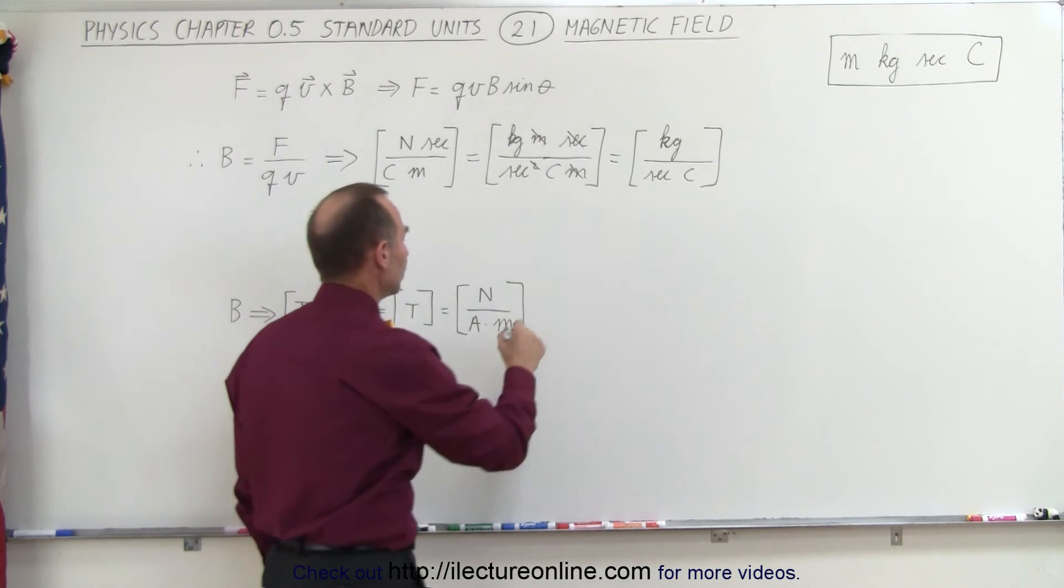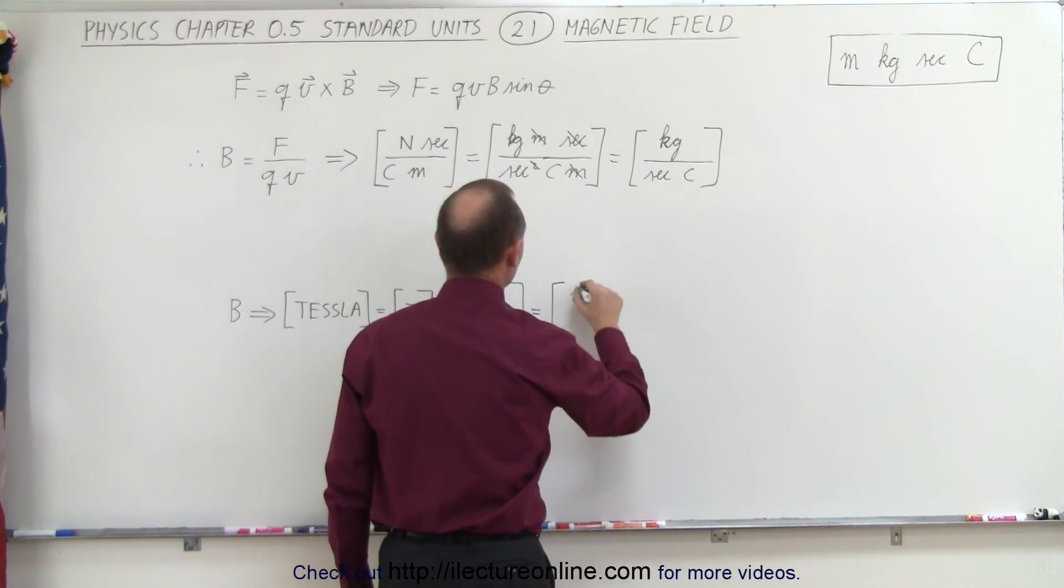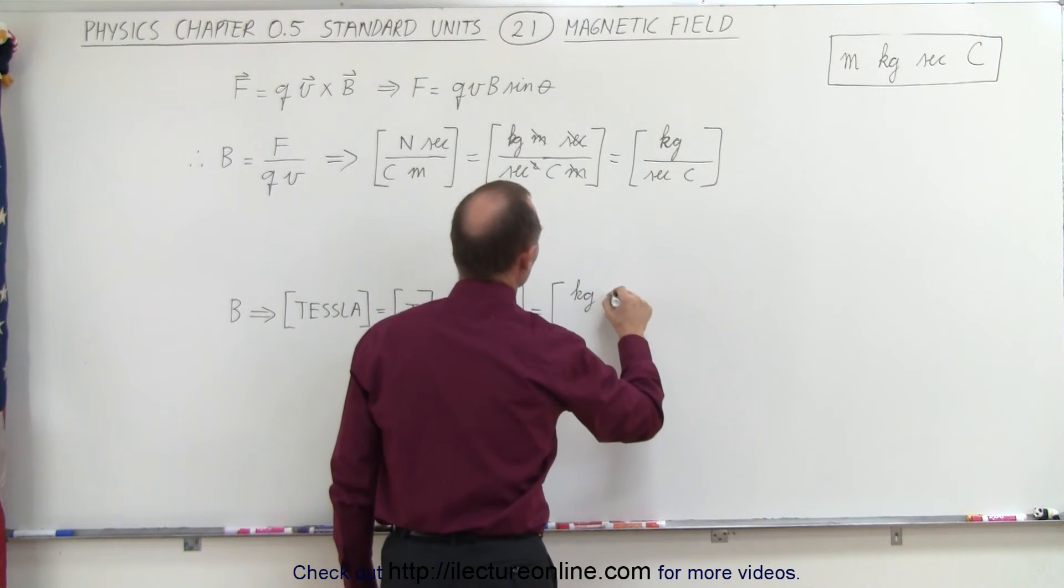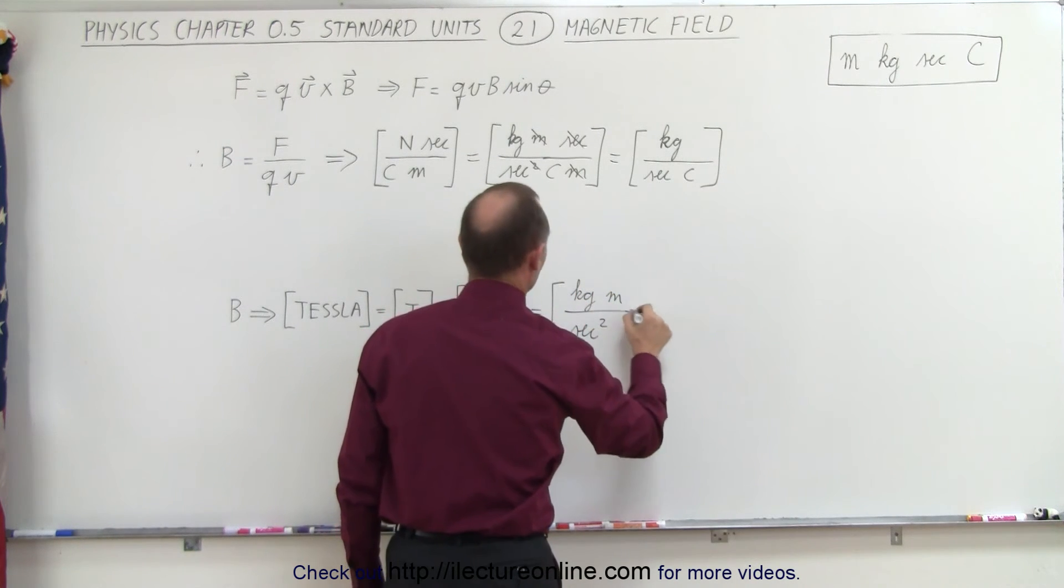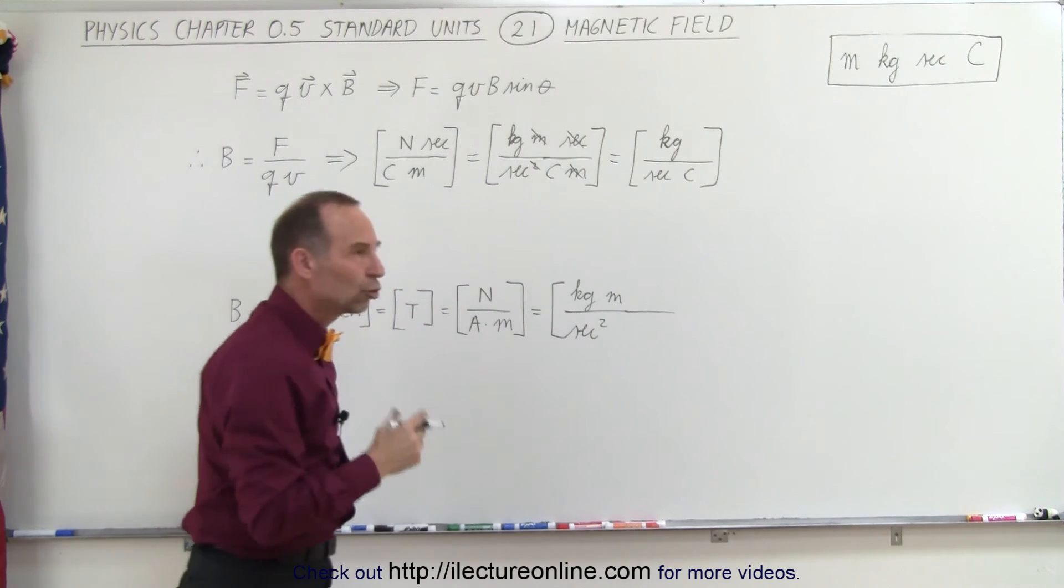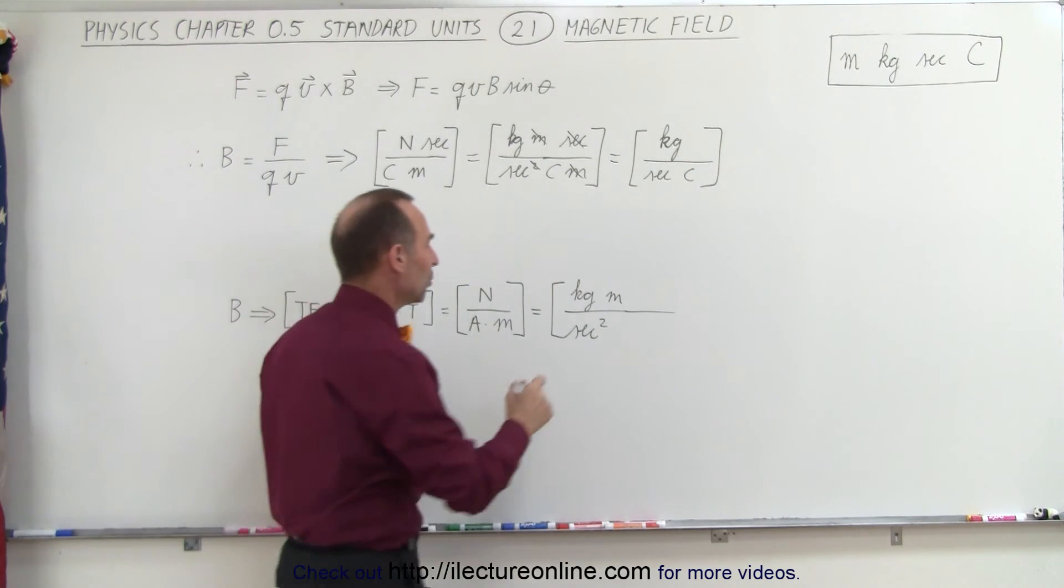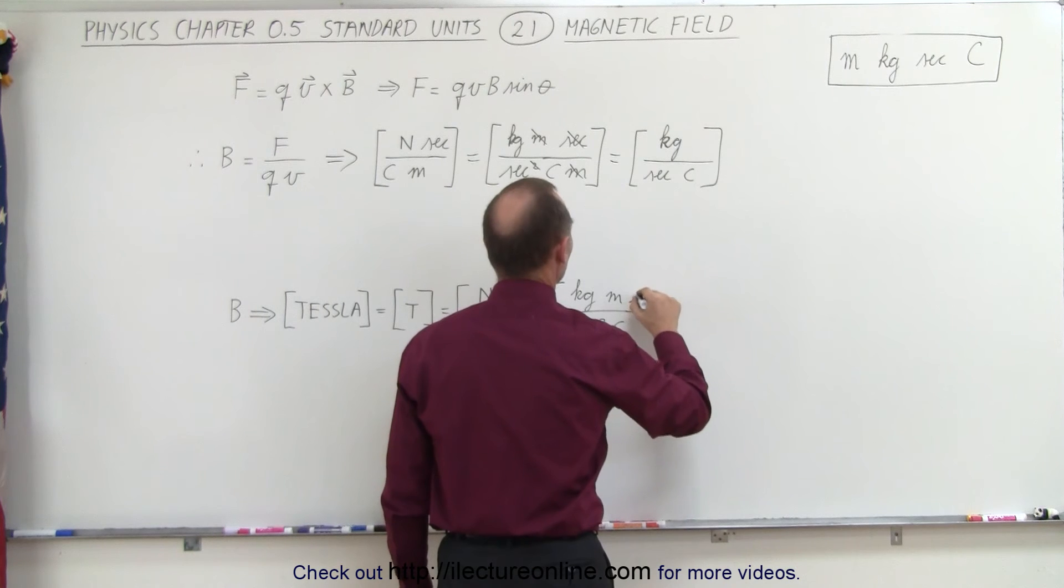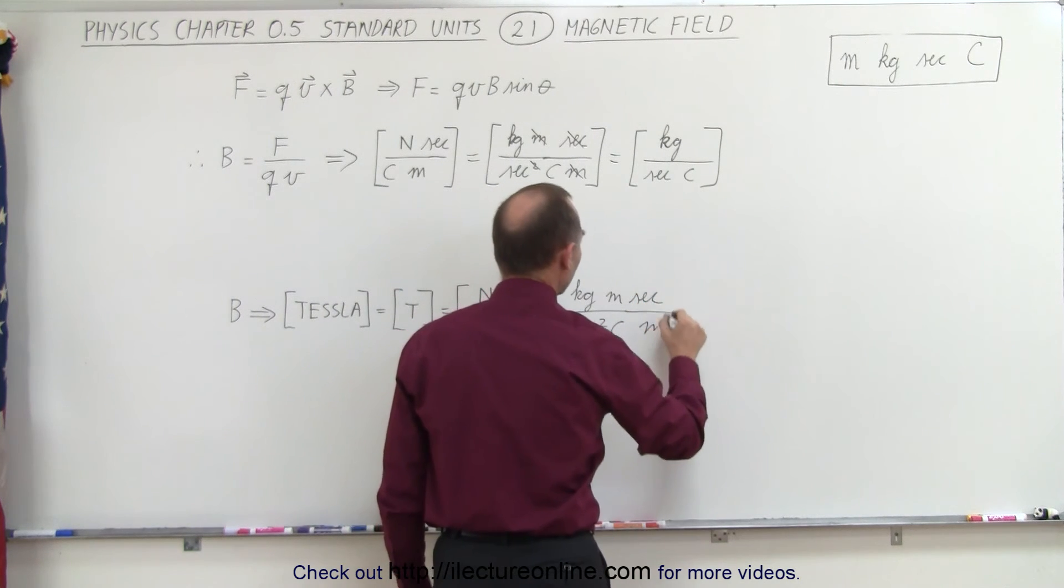We can express newtons in terms of kilograms meters per second squared. Amps is charge per unit time, so that would be coulombs per second, which goes to the numerator, and then we have meters in the denominator.